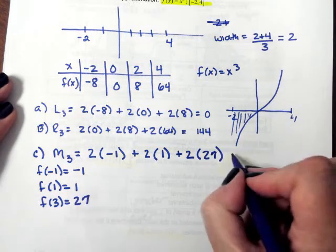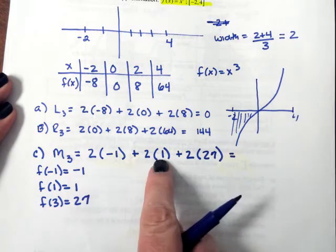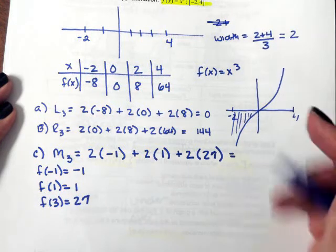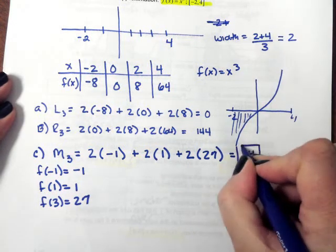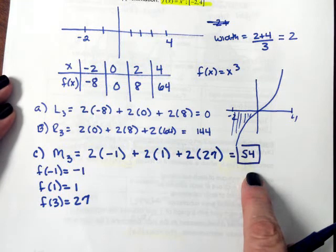When I add all these together: negative two plus two is zero, and two times 27 gives me 54. So the midpoint sum with three subintervals is 54.